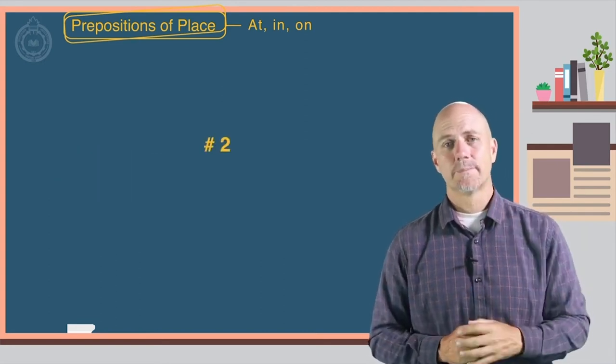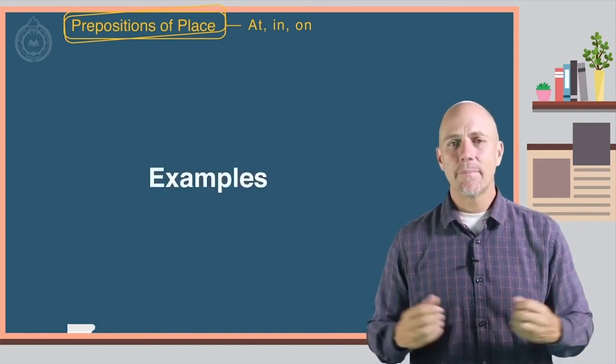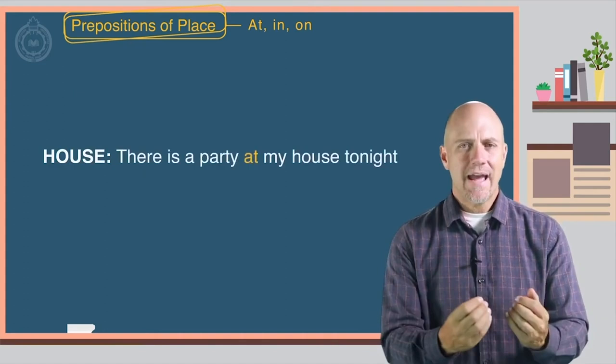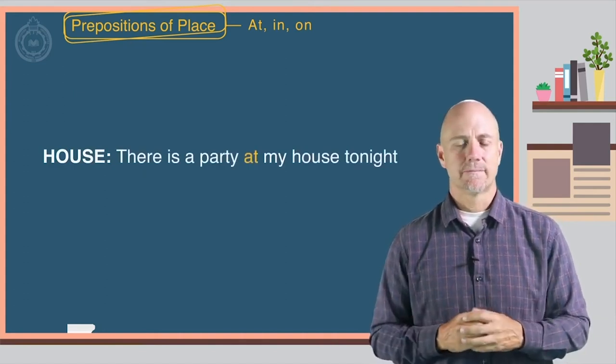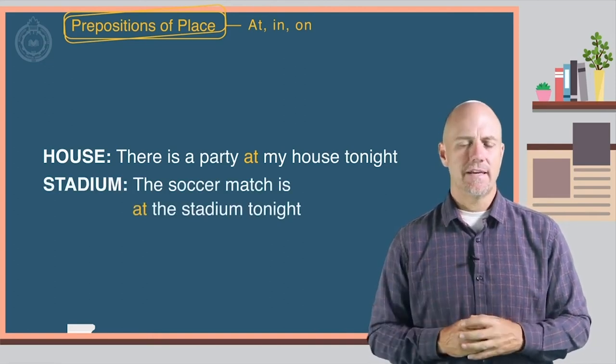Number two: to indicate a place. Here are some examples. A house: There is a party at my house tonight. A stadium: The soccer match is at the stadium tonight.